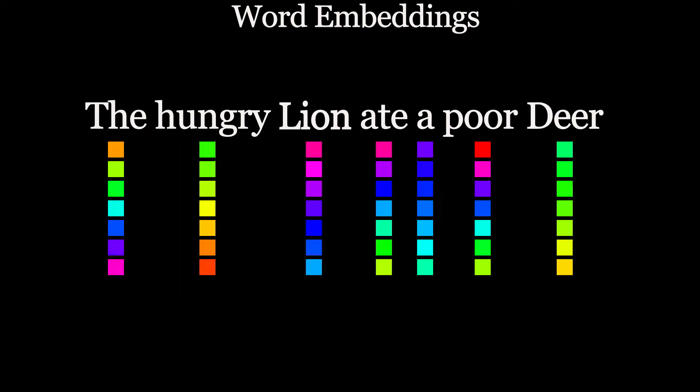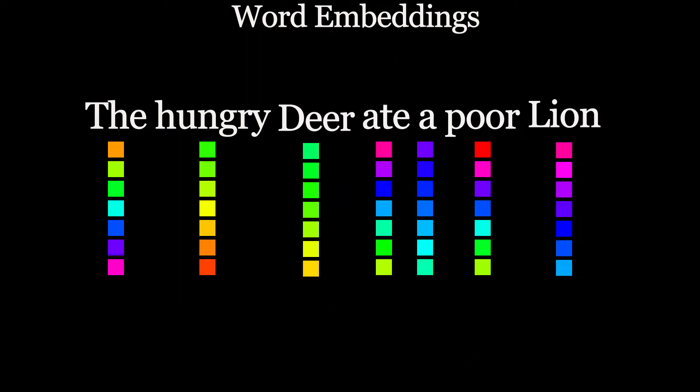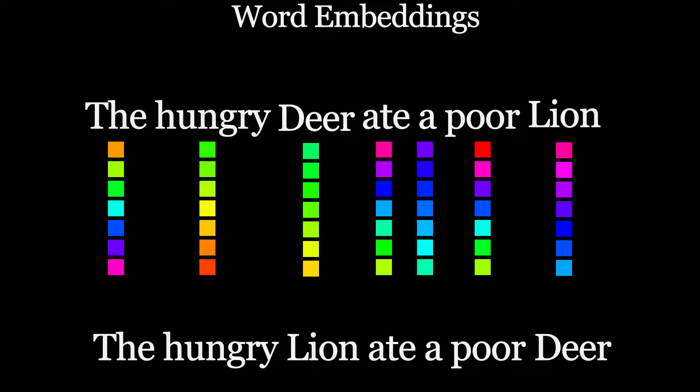For example, if you take this sentence and just switch the position of a word, then the whole meaning of the sentence has been changed. But according to word-to-vector model, the vector representation of words in both sentences is the same, and hence for it both sentences mean the same.